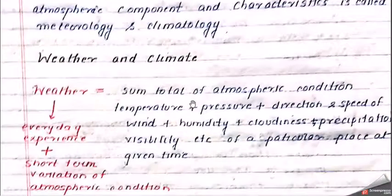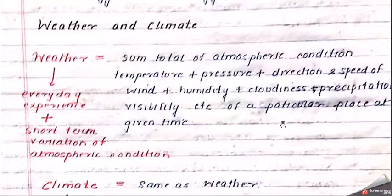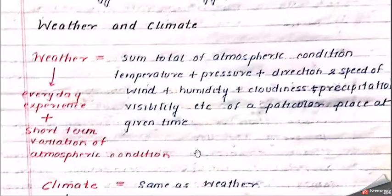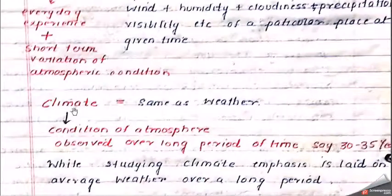In climatology we come across the concept of weather and climate. What is weather? Weather is the sum total of atmospheric conditions — that means what is happening at a particular time. Like if you're sitting right now, what is the weather outside — temperature, pressure, direction and speed of wind, humidity, cloudiness, precipitation, visibility — all at a given time.